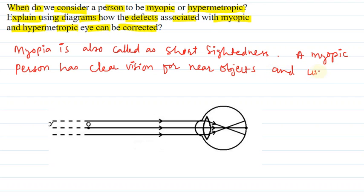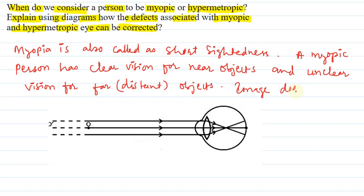And unclear vision for far or distant objects. Image does not form on retina. It forms in front of retina.